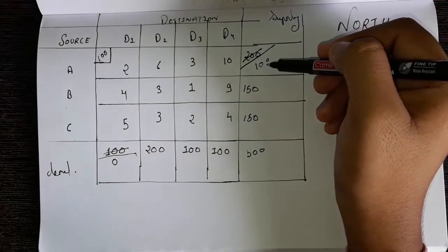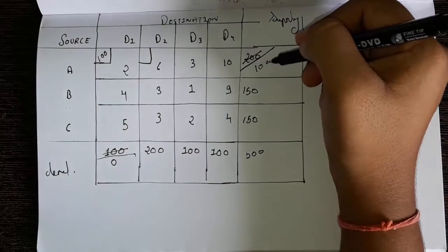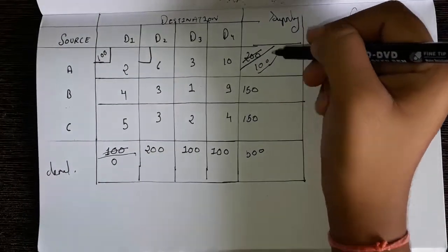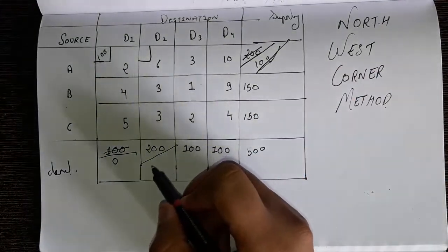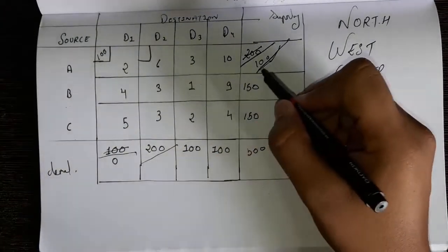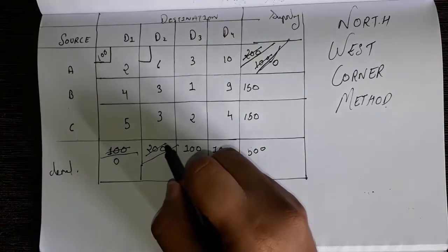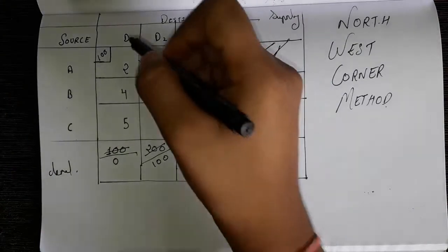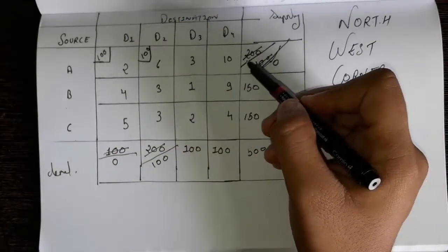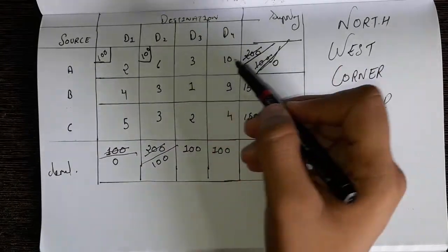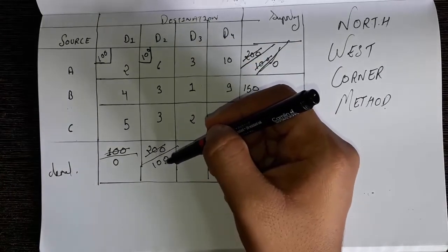Now we will go to the right side because 100 is remaining on this side. Now we have to see this 100 and this 200. Subtract 200 by 100, so 200 minus 100 equals 0. This 100 will become 0, this 200 will become 100, and the 100 we have to write here. Now we cannot go on the right side, we have to come to the downside because 100 is remaining.